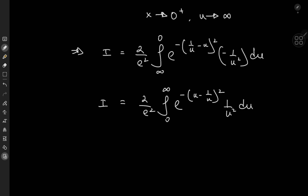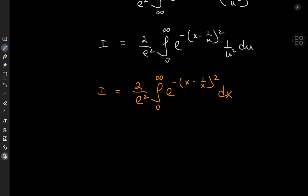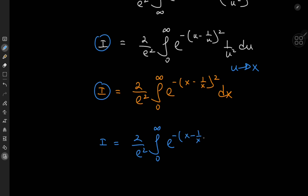This is a new structure for the target integral i. The structures in white and orange both represent the same target integral i. For the structure in white, we could just rename all the u's back to x, because that would not alter the structure of the integral — it's just a dummy variable. So we have 2 by e squared times the integral from 0 to infinity of e to the negative x minus 1 by x squared times 1 by x squared dx.